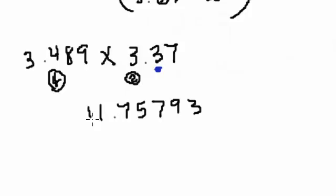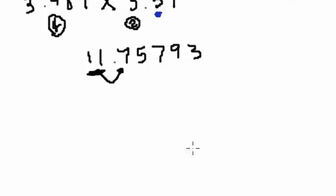So 2 significant figures means right here, you have 2 numbers, and we have to round by looking at the number next to it, so 11.75793 should round to 12. So the answer to this problem is 12. Let's go ahead and let's do more examples.